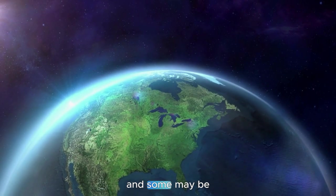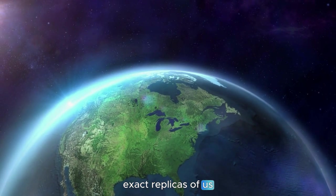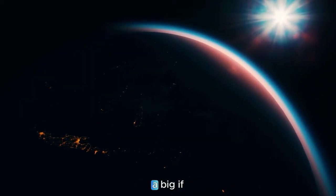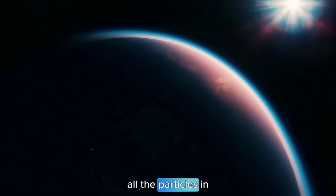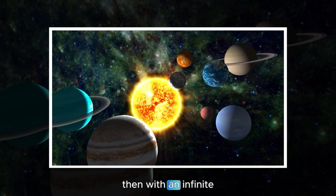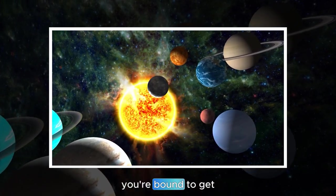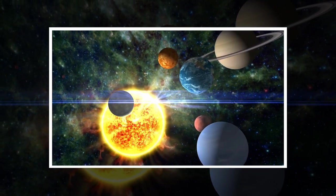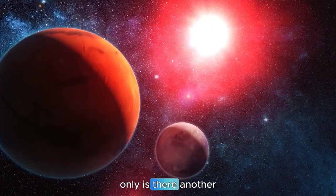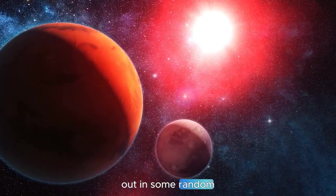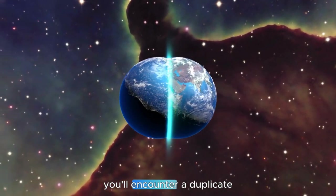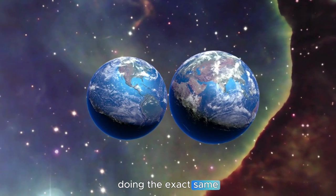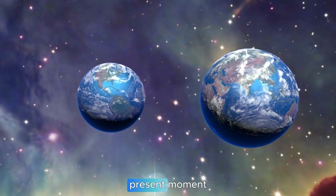And some may be exact replicas of us. If, and this is a big if, there are only a finite number of ways to arrange all the particles in a given universe, then with an infinite number of universes, you're bound to get repeated copies. That means that not only is there another universe out in some random direction, but that if you follow that line far enough, you'll encounter a duplicate of you doing the exact same thing right now, in this present moment.